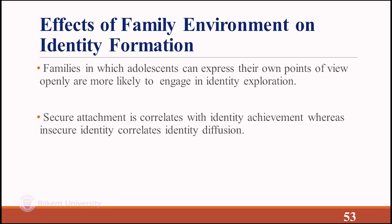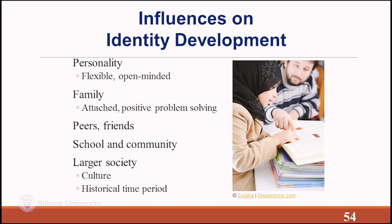Families in which adolescents can express their own viewpoints openly are more likely to engage in identity exploration. Secure attachment correlates with identity achievement — because attachment provides a secure base from which to explore, and securely attached adolescents feel more secure in exploring, which leads to commitment. Insecure attachment correlates with identity diffusion. Personality also matters: flexible, open-minded individuals are more open to considering alternatives. Peers and friends are important because they provide alternatives, new information, and sometimes pressure to explore.